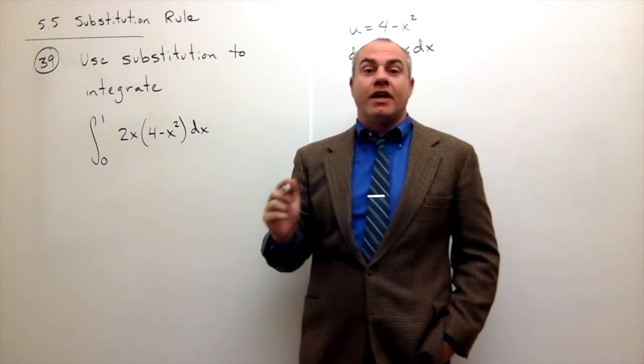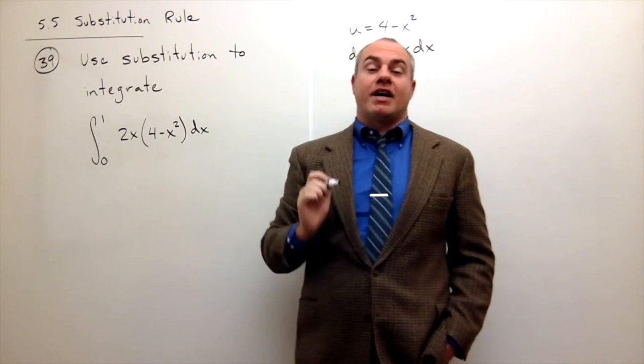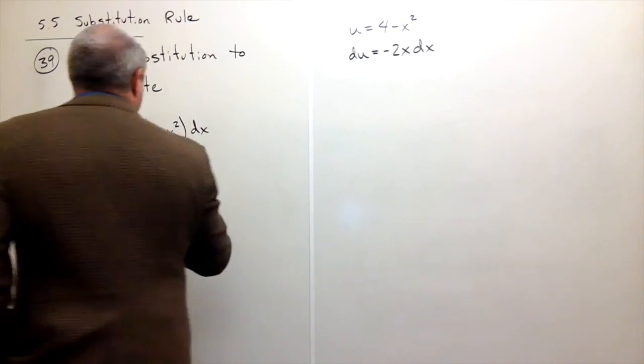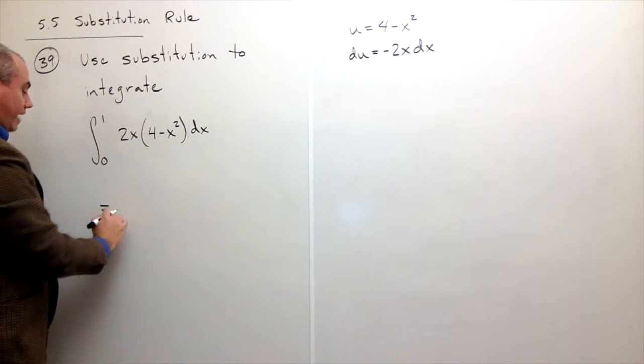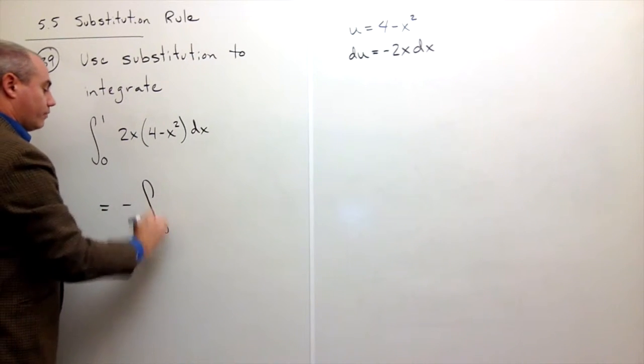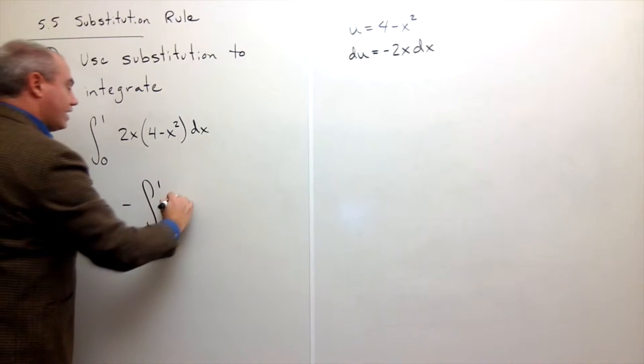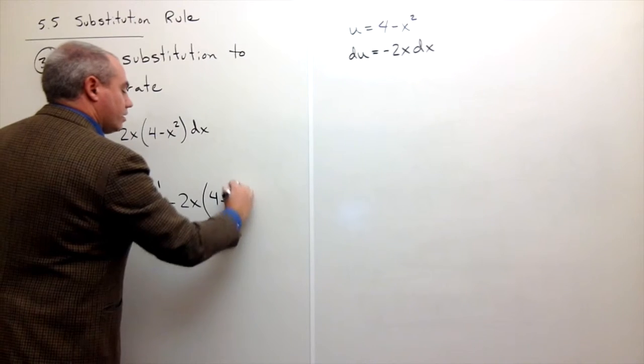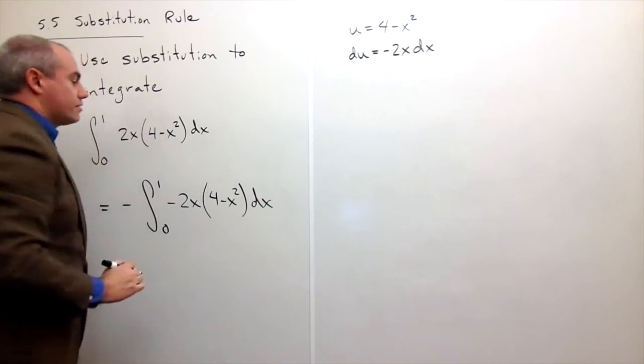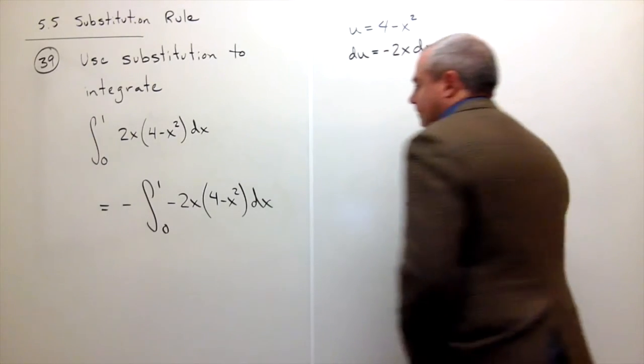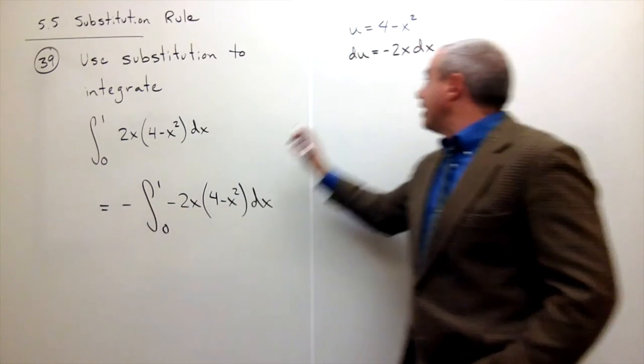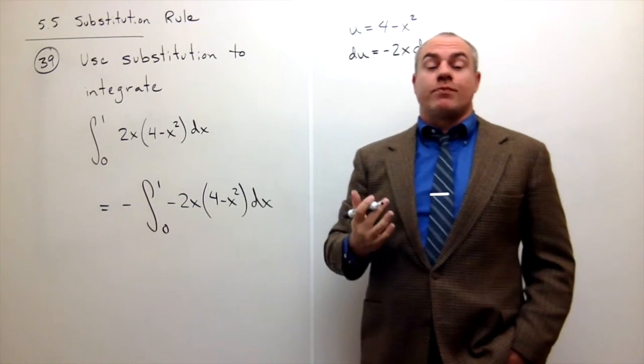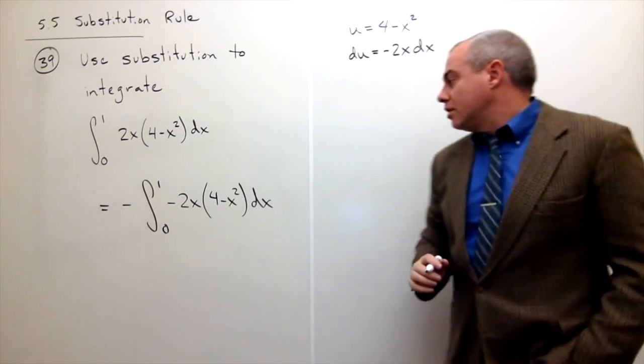Let's put in a negative and then we'll have to multiply on the outside by a negative to compensate for it so we're just multiplying by 1. So I could rewrite this integral as negative integral from 0 to 1 of negative 2x times 4 minus x squared dx.